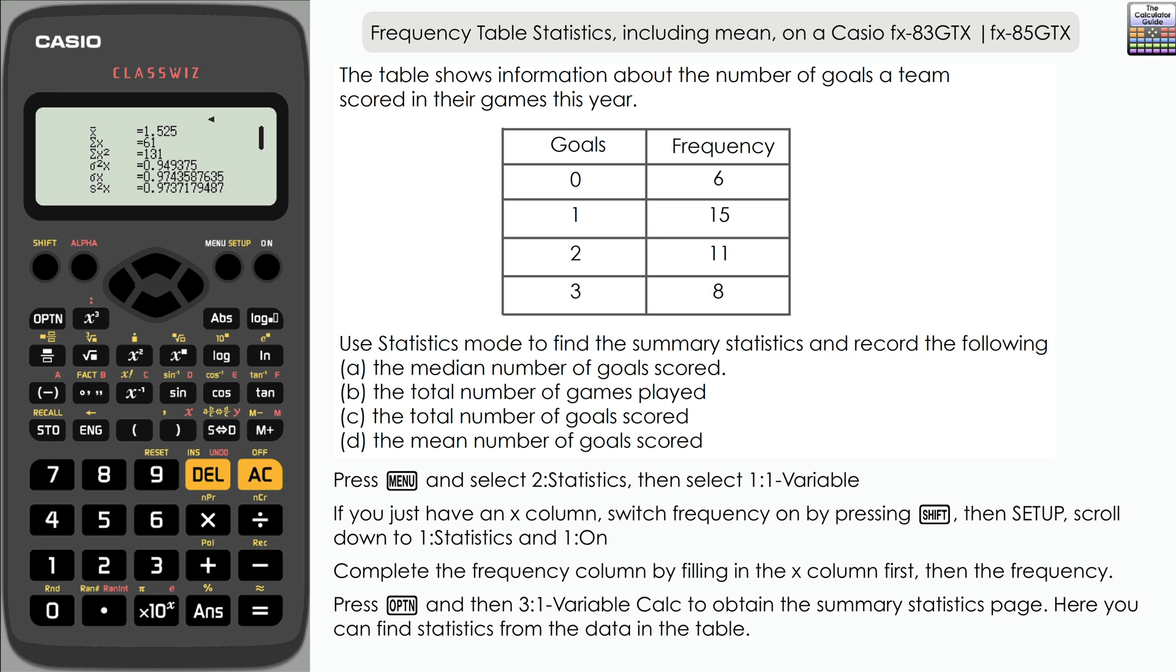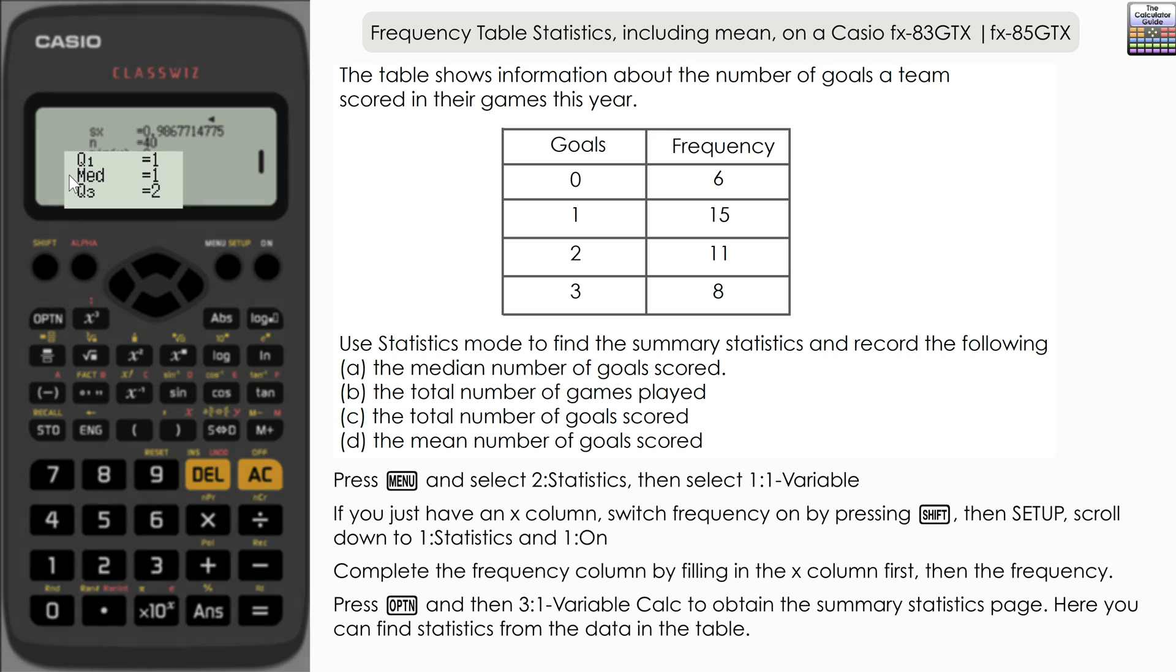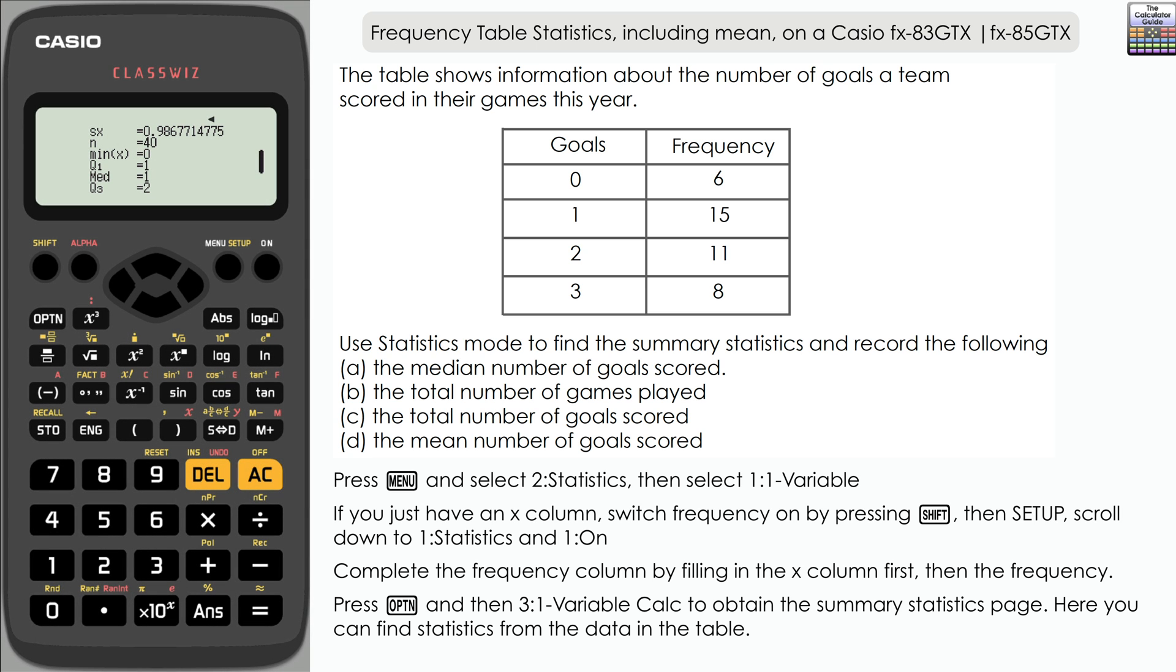First of all we want to find the median number of goals scored. Scroll down the page and you can see here that we've got median (Med) of one, so the median is one. We also have Q1 and Q3 there as well representing the lower quartile and the upper quartile respectively.